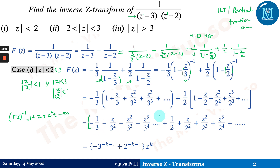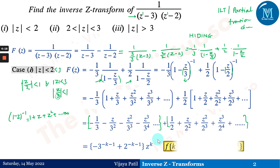Writing the generalized term of this particular sequence: the first sequence gives minus 1/3, minus 1/3 squared, minus 1/3 cubed, and so on, which can be written as minus 3 to the power (minus K minus 1). The second sequence is 2 to the power (minus K minus 1). So the inverse Z transform for case 1 is: minus 3^(−K−1) plus 2^(−K−1).